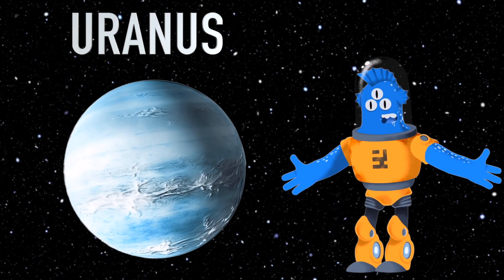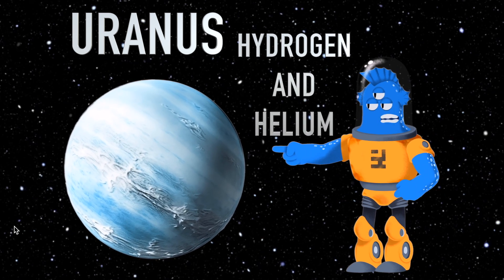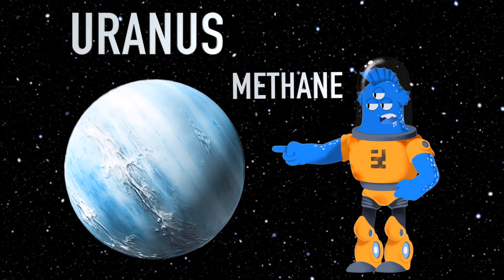Uranus is a gas giant just like Jupiter and Saturn, but it's not as massive. Its atmosphere is mostly hydrogen and helium, with a bit of methane that gives it a blue-green color.